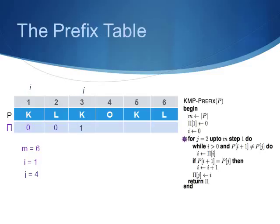Now, j is equal to 4 and i is equal to 1. P[i+1] does not match P[j], so we go into the while loop and i gets the value of pi[i], which is 0. We move to the if condition, but this is not satisfied, so pi[4] becomes 0. Similarly, for j equals 5 and i equals 0, we see that P[i+1] matches P[j]. Therefore, the if condition is satisfied. i is incremented, so pi[5] becomes 1.